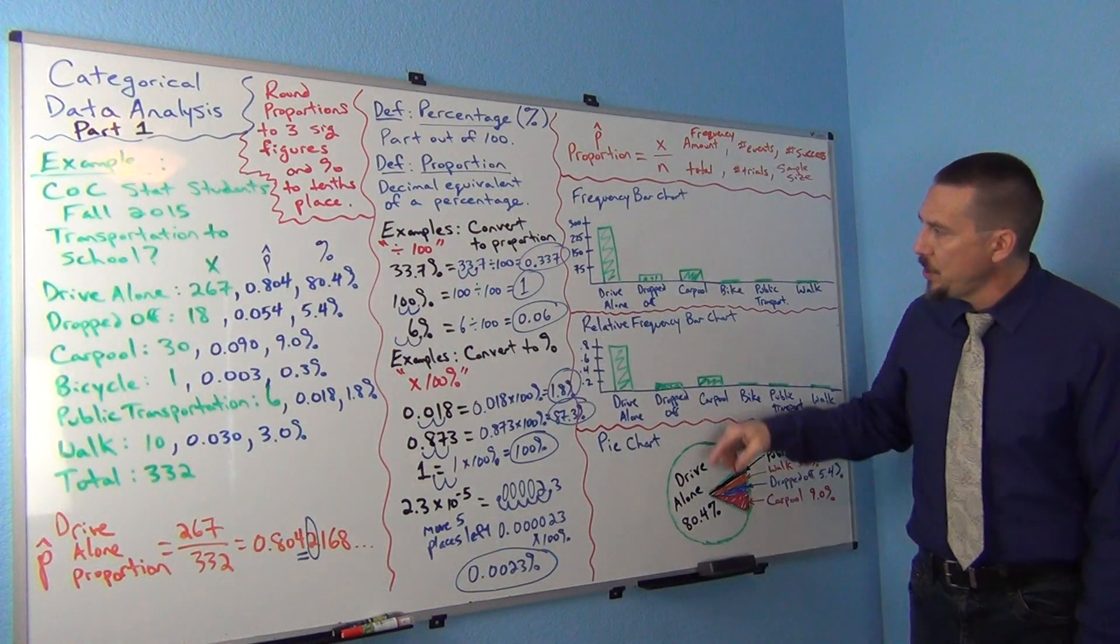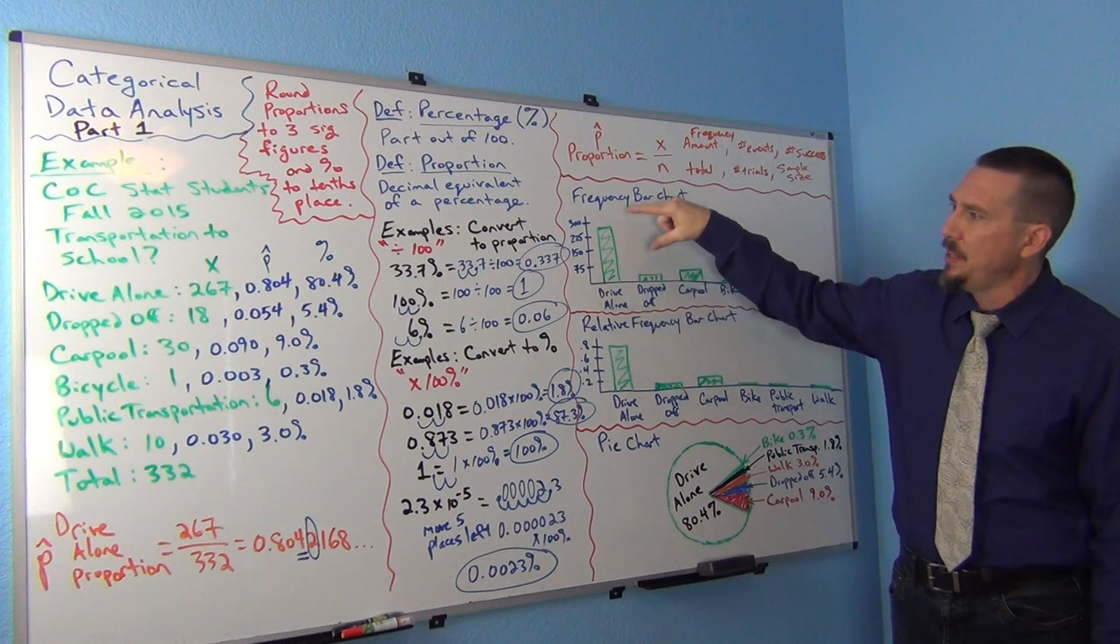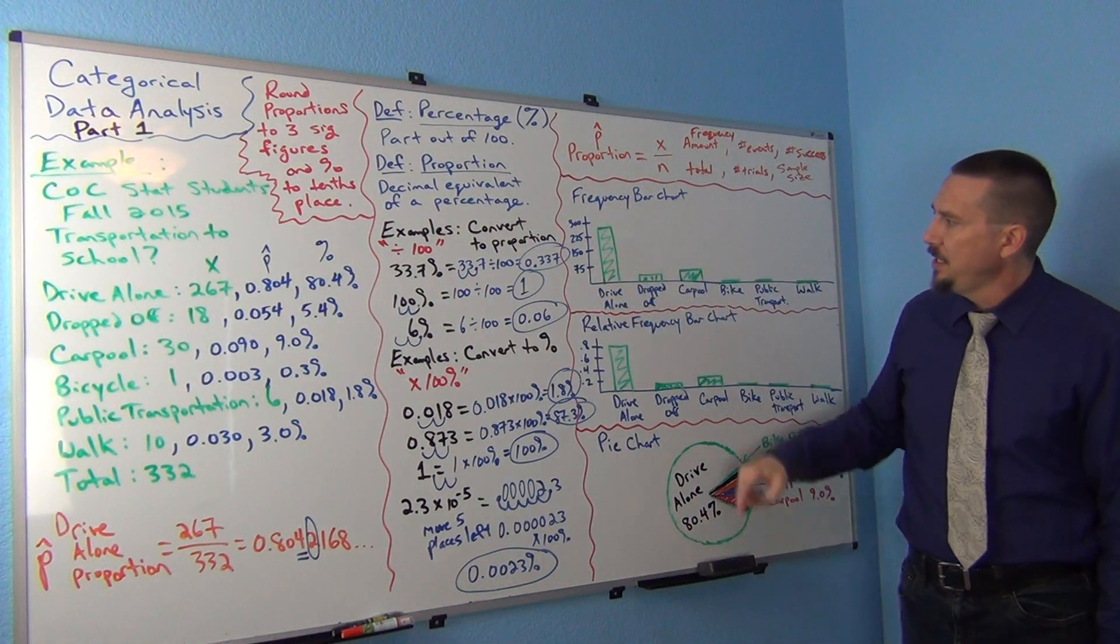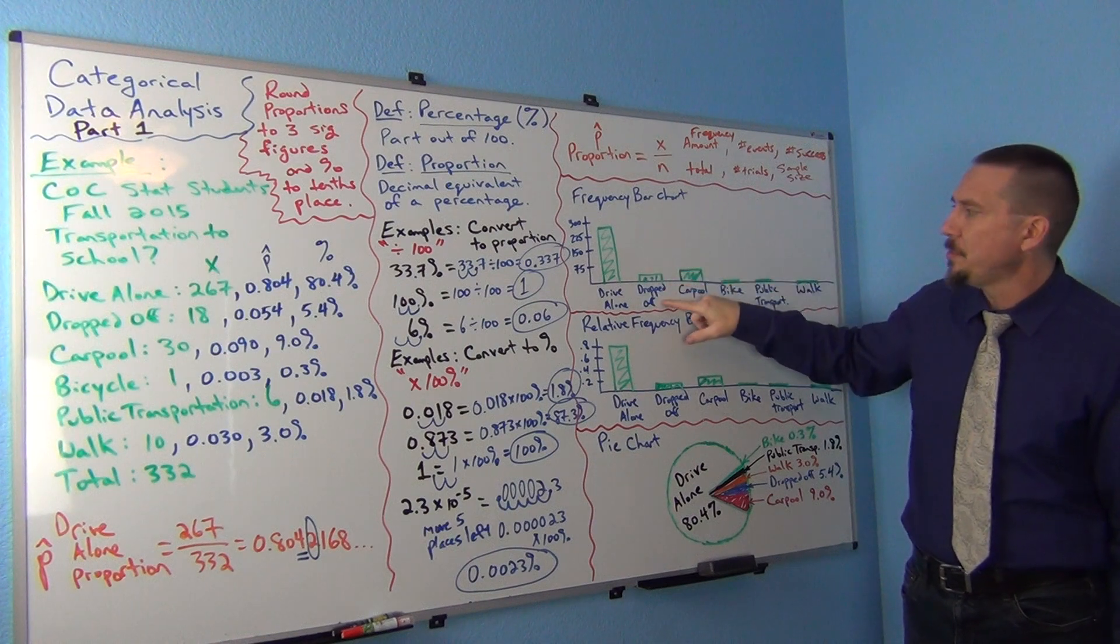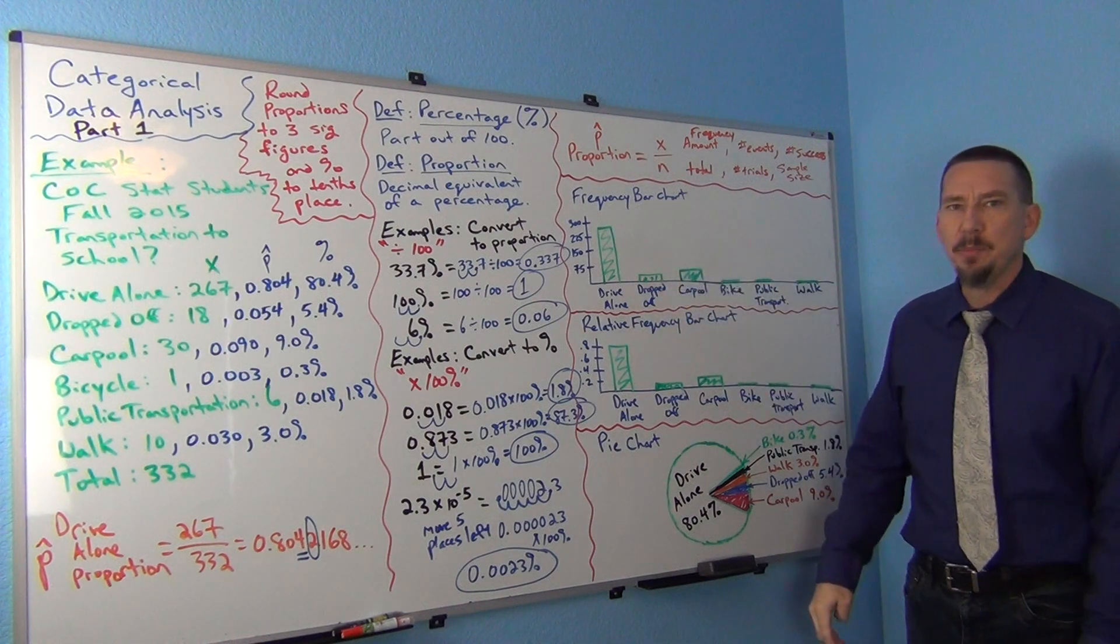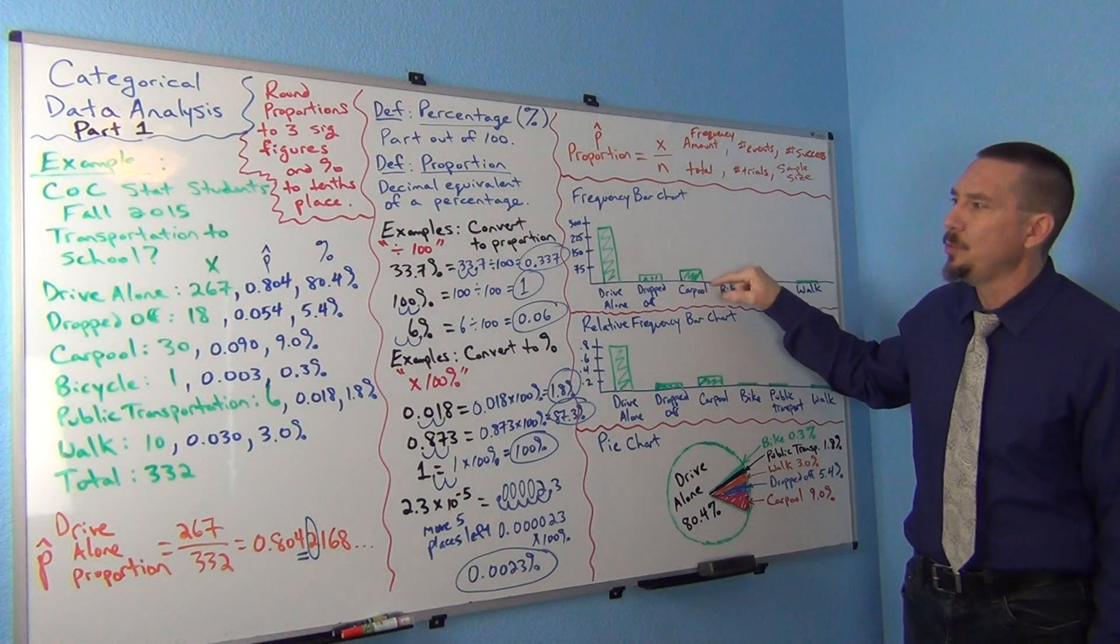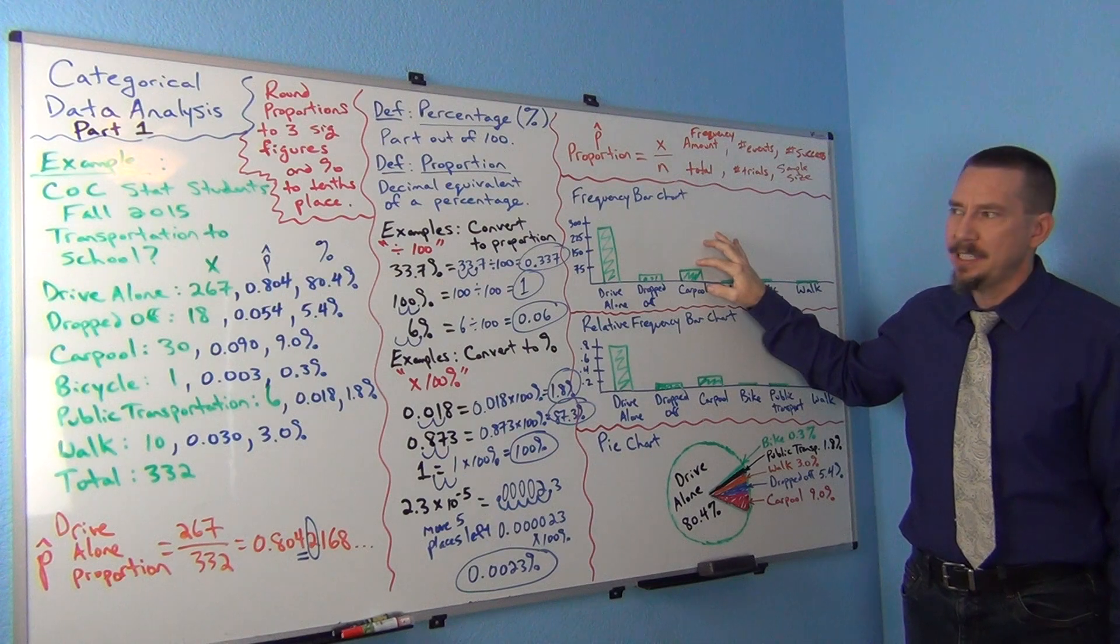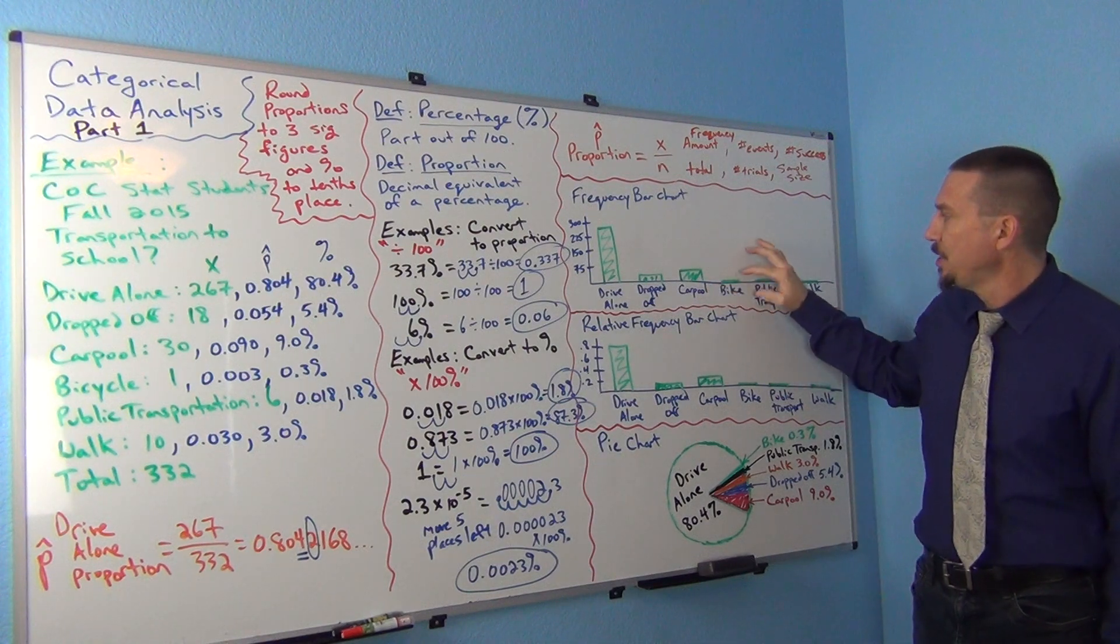So if you notice, the bar goes up to 267 there. Because there was 267 was my frequency. And then this bar, the dropped off bar, goes up to 18. Because there's 18 people that were dropped off. And the carpool one goes up to 30. Because that, again, there was 30 people that were dropped off and so on.